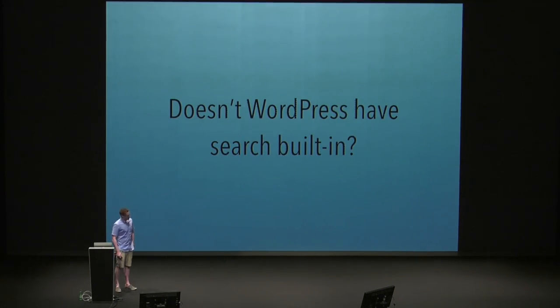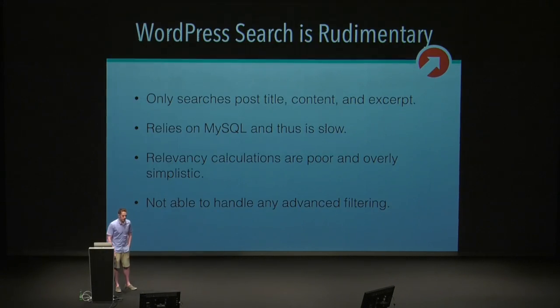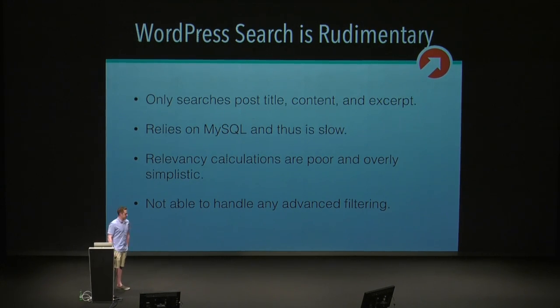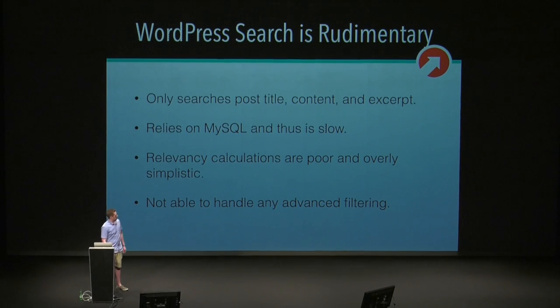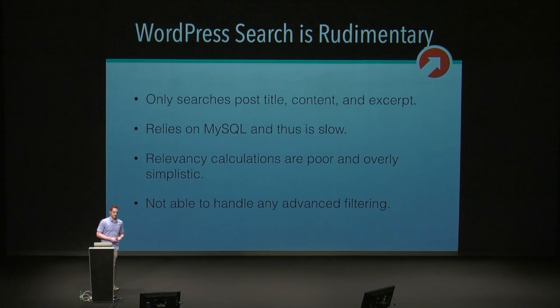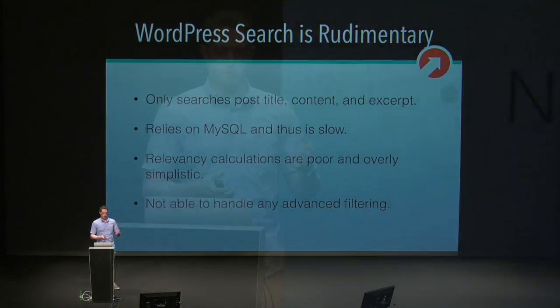So, doesn't WordPress have search built in? That's the big question. WordPress search is pretty simple. By default, WordPress only searches the post title, post content, and an excerpt. It relies on MySQL, which can be slow in certain situations. Search results and relevancy calculations are pretty simplistic and aren't able to handle a lot of customization. And there isn't really a way to do any sort of advanced filtering.